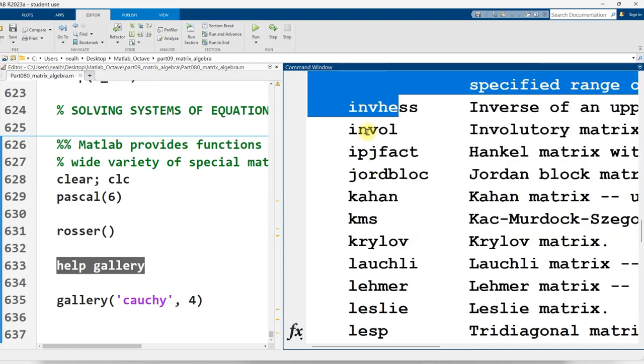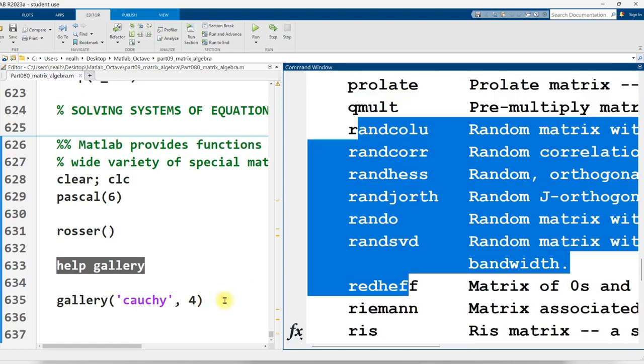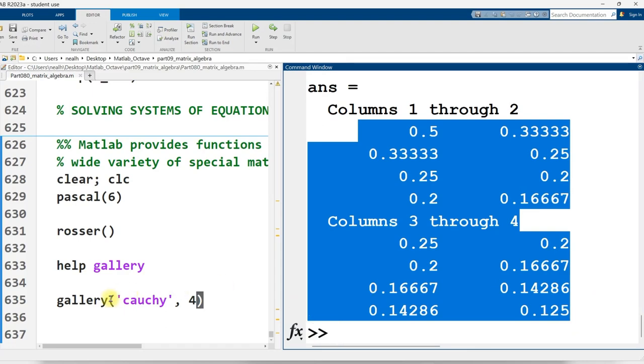I'm just scrolling on down here, and I'm not even at the bottom. And you can request a particular one by saying gallery parentheses Cauchy 4, and I get a 4x4 Cauchy matrix. I'm not even sure what that one is either, but apparently there it is.